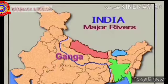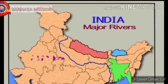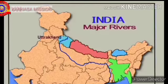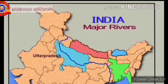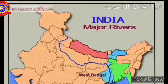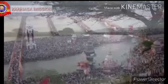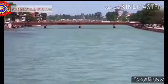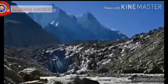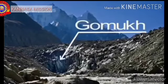River Ganga is the longest and the most important river of India. It is 2,525 km long and flows through the states of Uttarakhand, Uttar Pradesh, Bihar, Jharkhand, and West Bengal. River Ganga is the most sacred river of Hindus and is also a lifeline to millions of Indians. It originates from the Gangotri glacier at Gomukh.